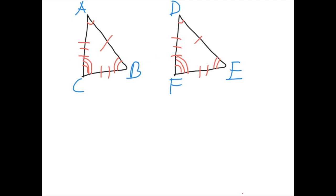Same with the angles. One mark, one mark — so those two are congruent. Two marks, two marks — so those two. And three marks, three marks — those two. Now let's write out which parts of the triangle are congruent to which parts of the other triangle. Let's start with the easy one, the angles. Angle A is congruent to angle D.